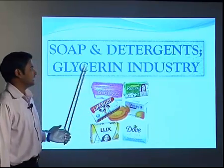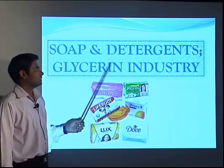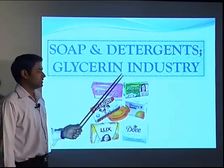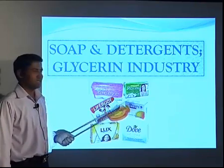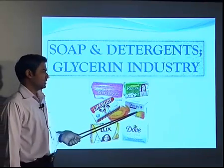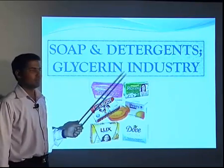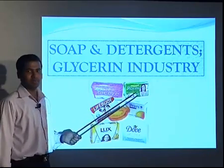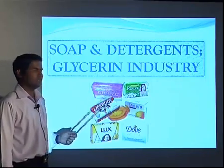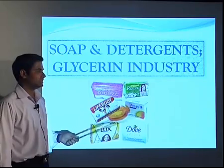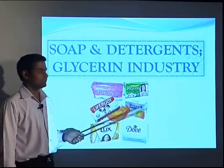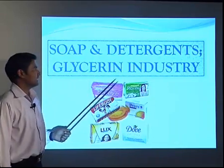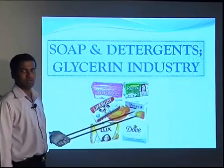This lecture covers the soap and detergent industry, and also glycerin manufacture, which is the byproduct of soap and detergent. Since the first thing we want when we wake up is toothpaste or soap for cleaning purposes, this is an important industry mainly useful in sanitation and cleaning. We will discuss in further slides how to manufacture soap and detergents, and also how to get glycerin as a byproduct.